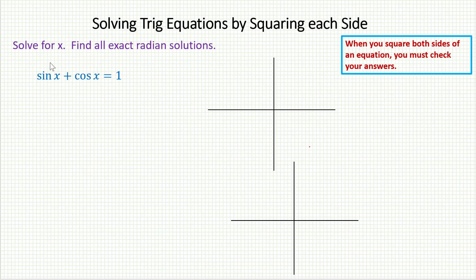Can I use an identity? I don't really see one. Nobody's squared here, so I don't really have an identity I can use. Well, in this situation, one technique that you can try is called squaring each side.